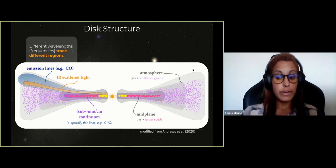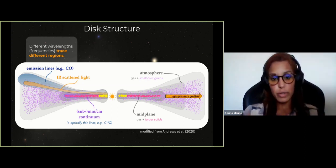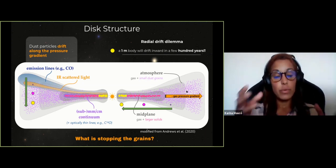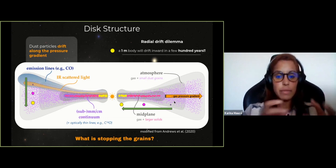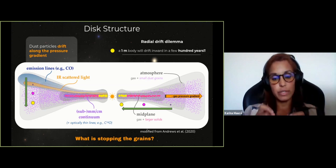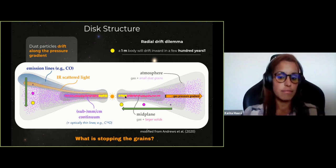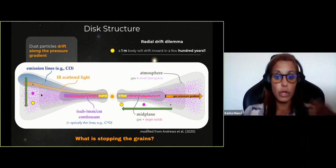Protoplanetary disks also have a flaring structure with higher material above the midplane at greater distances from the star. Given this gas distribution, there is a very important process called radial drift. Small micron-sized dust is well coupled to the gas and moves at super-Keplerian velocities, but larger grains want to move at Keplerian velocity. This velocity difference produces a headwind, causing large particles to lose angular momentum and drift inward. As they drift they encounter denser regions and possibly grow, and dust settling from upper layers to the midplane also promotes grain growth.